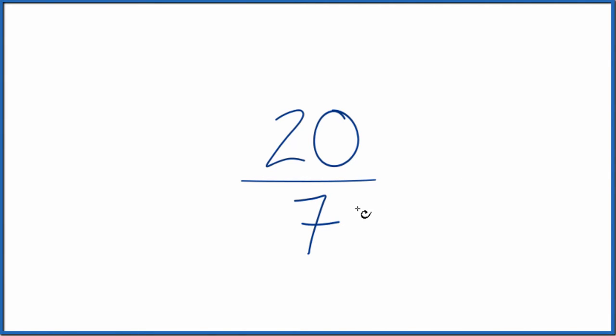So we look at this, we know that we're going to have a number greater than one because 20, the numerator, is greater than the denominator. So here's how we do it.